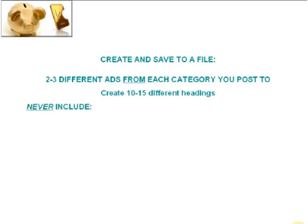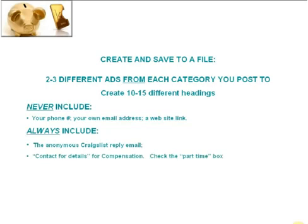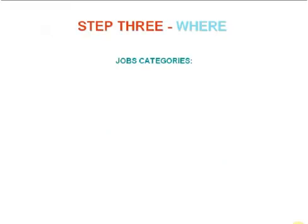Create 10 to 15 different headings. Never include your own phone number, your own email address, or a website link in the ad. Always include and leave the anonymous Craigslist reply email. In the compensation section, put 'contact for details' and check the part-time box so it shows up under the part-time listings on Craigslist. Always include 'reply must include phone number.'